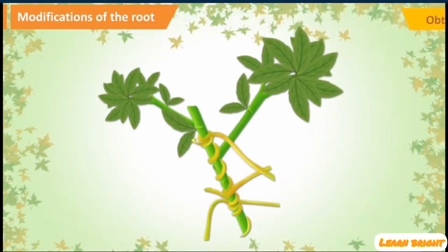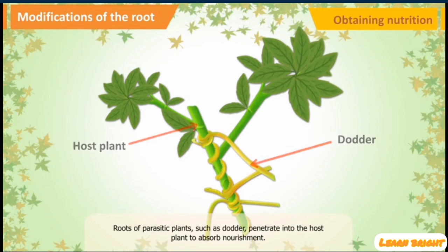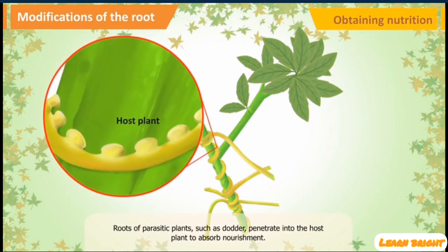Obtaining Nutrition: Roots of parasitic plants such as dahlia penetrate into the host plant to obtain nourishment.